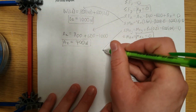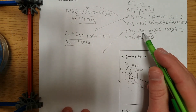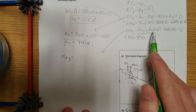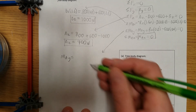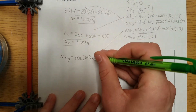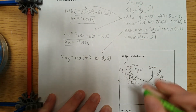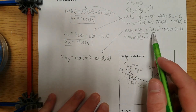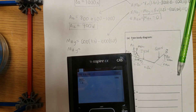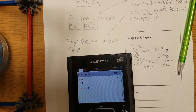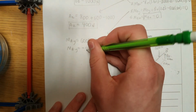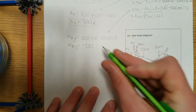We've now solved 4 of the 5 unknowns. For the last one, using the moment about Y equation with BZ equals 1,000: MAY plus 1,000 times 0.8 minus 600 times 0.4 equals zero. So MAY equals 600 times 0.4 minus 1,000 times 0.8, which gives MAY equals negative 560 Newton-meters.